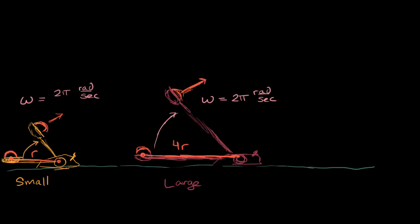So my question to you is, how would the velocity, the magnitude of the velocity of the pumpkin being released from the small catapult, so v sub small - if I put an arrow on top of it, we'd be talking about velocity. Since I didn't put an arrow, we're talking about just the magnitude of velocity. You could think about this as the speed. How does this compare to v sub large? We have the same angular velocity but we have different radii. Pause the video and see if you can figure that out.